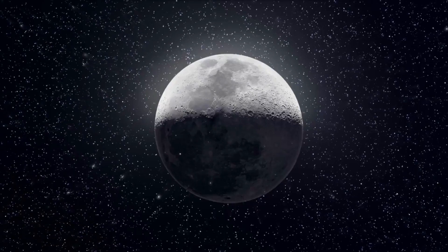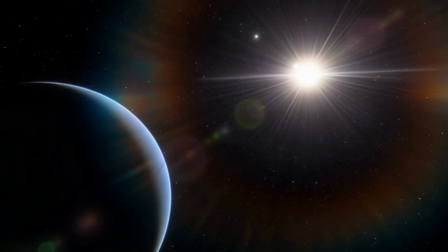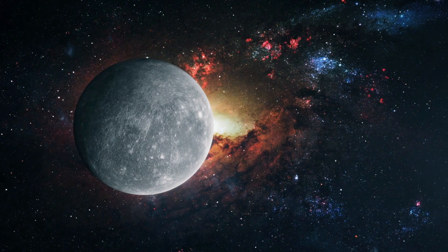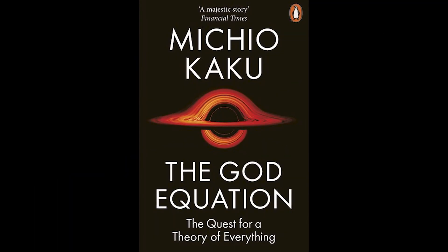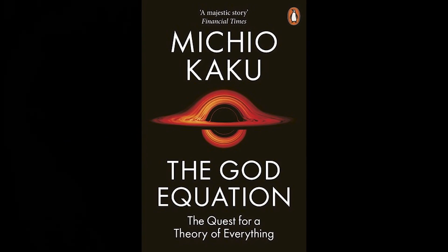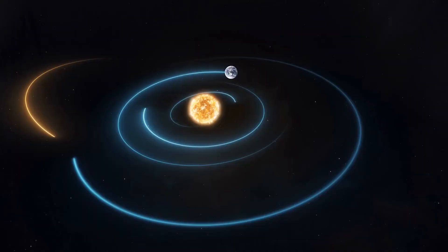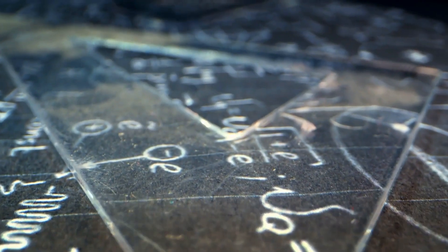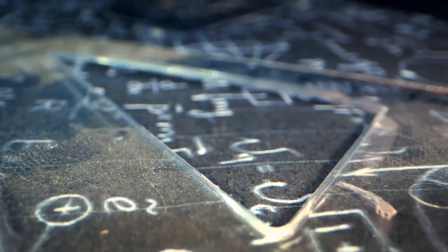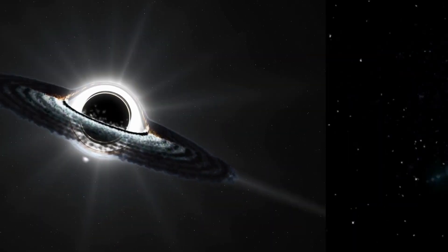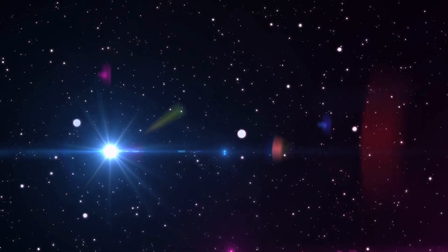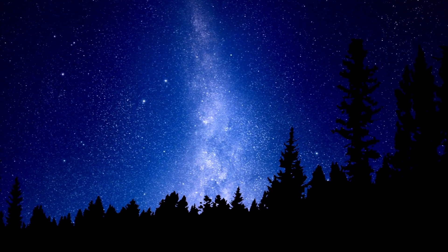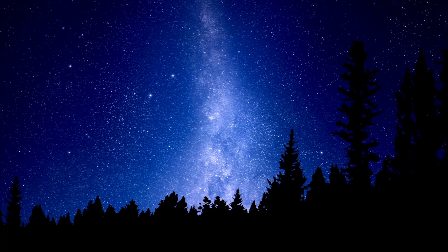What if there was a single equation that could unlock the secrets of the universe? This is the bold claim made by physicist Michio Kaku in his latest book, The God Equation. Kaku explores the possibility of a formula that could help us understand the fundamental nature of the universe and solve some of the biggest mysteries of physics, from the nature of dark matter and dark energy to the existence of multiple universes beyond our own.